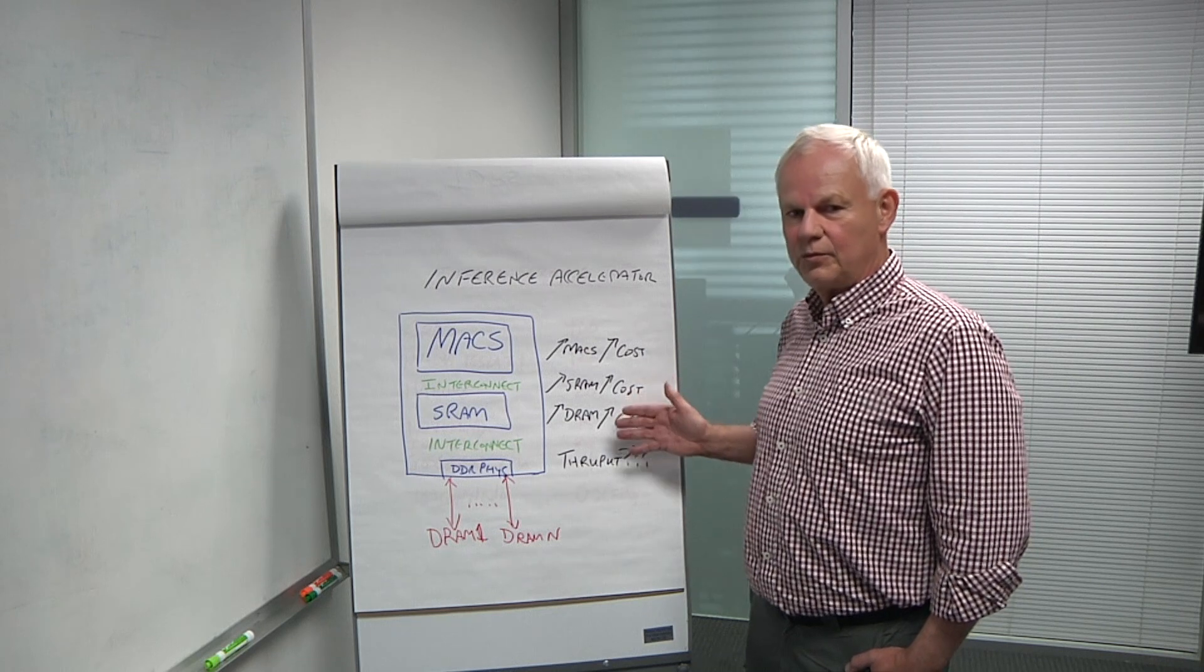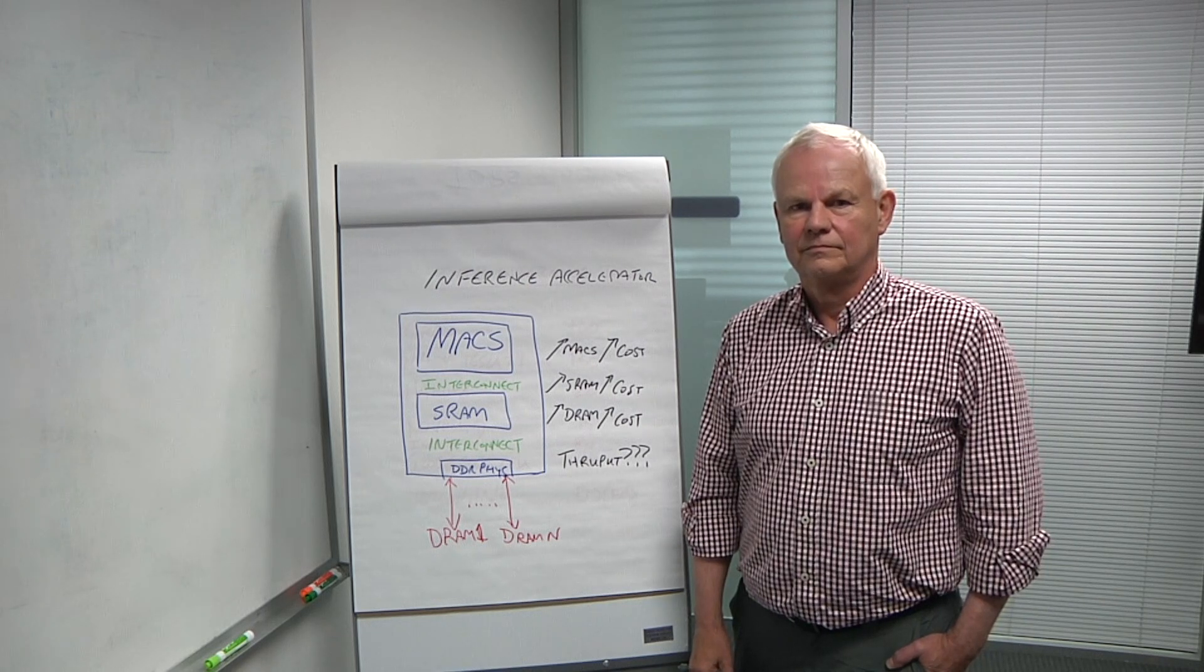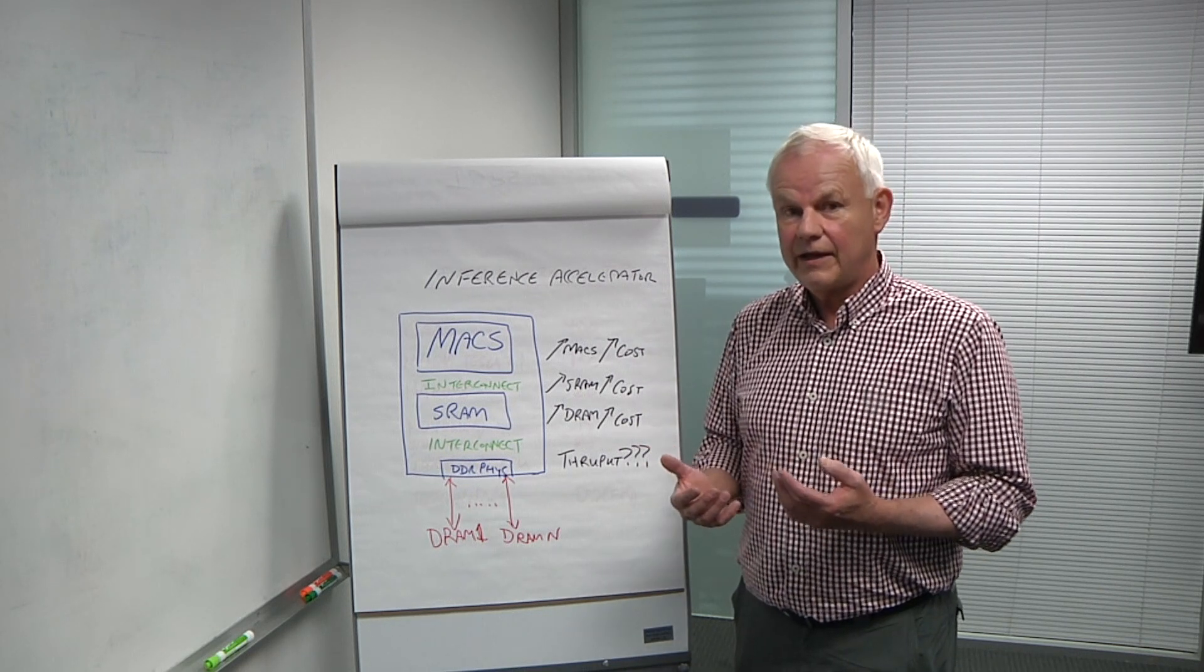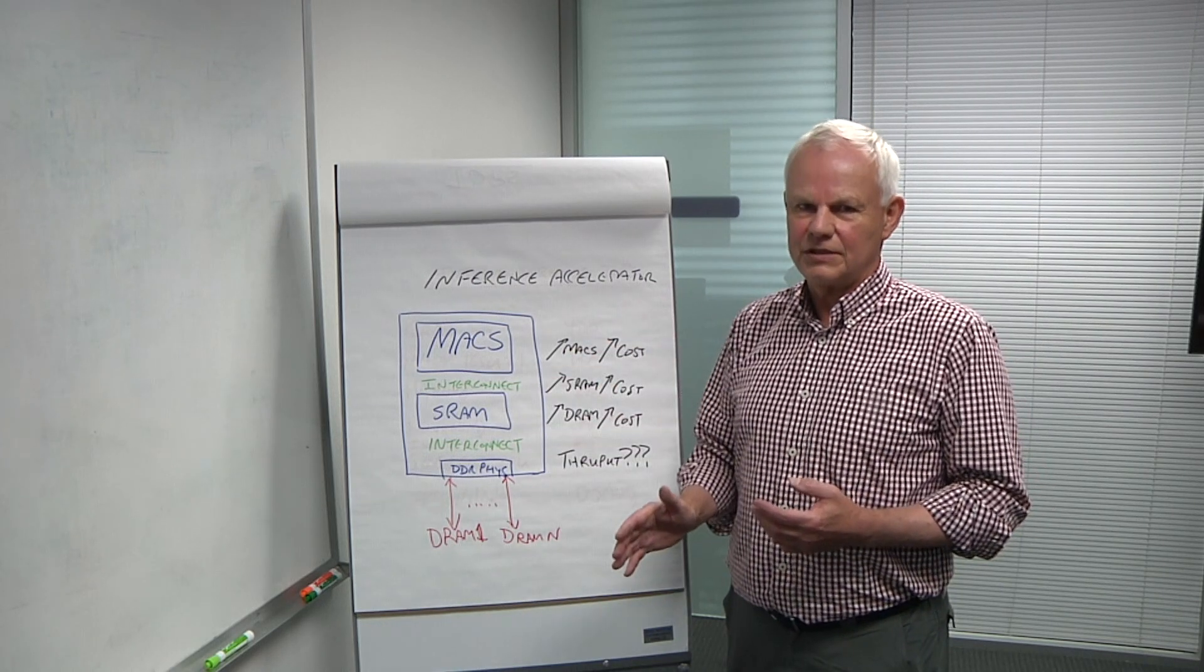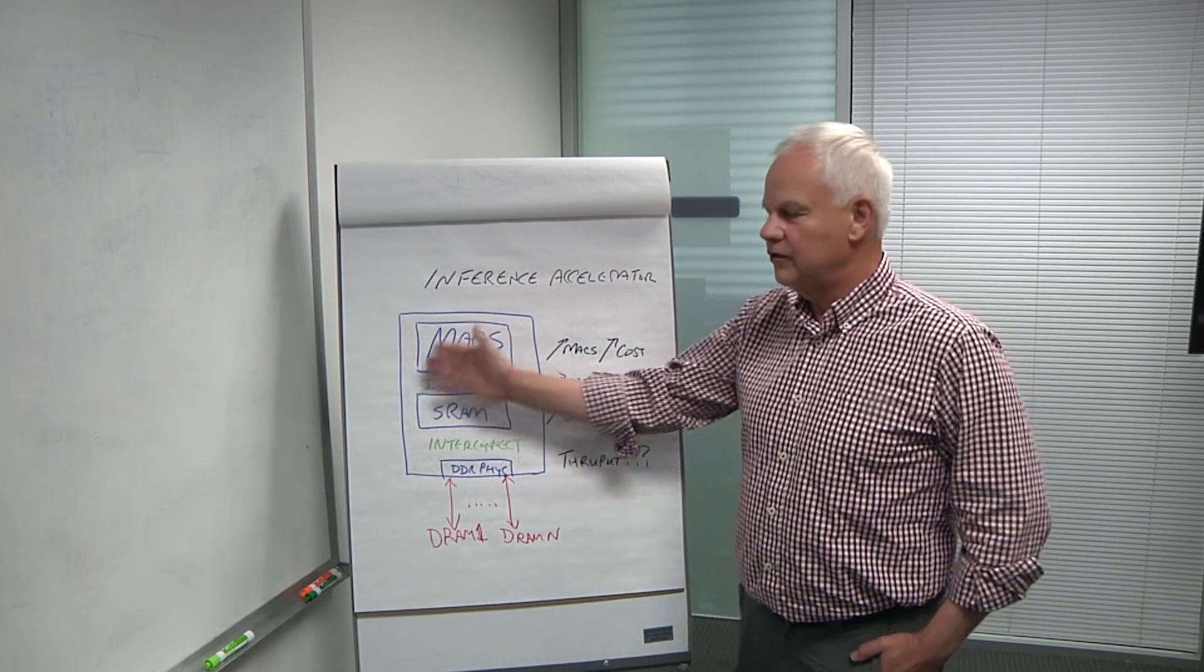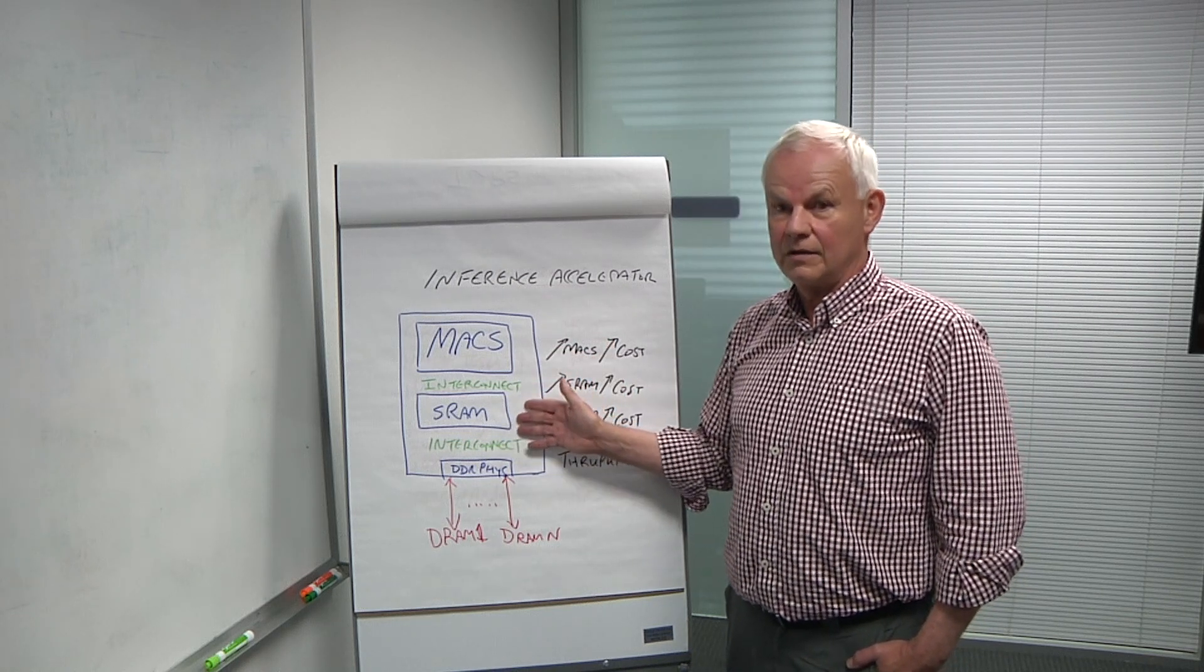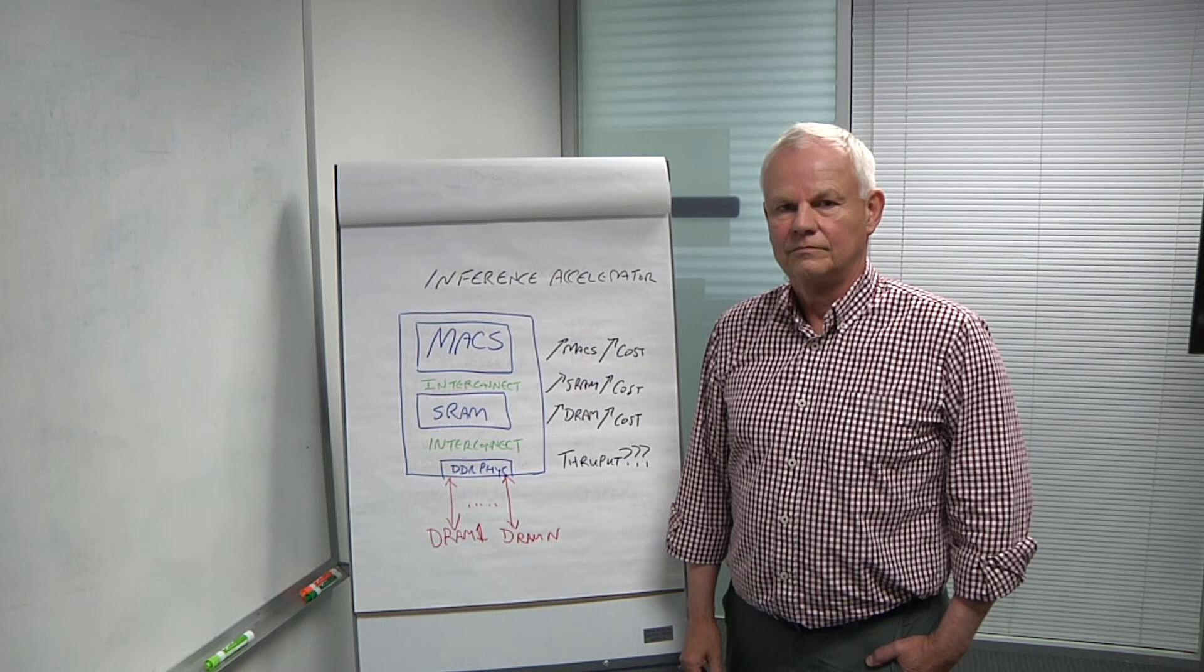Is there a way of saving on area? The area will be a function of two things. One is what's the throughput you're targeting with the chip. Some customers want object detection for backup cameras, so you don't need the same number of multiply accumulators as you need for a front-facing camera going 60 miles per hour. But the area of the chip will also be a function of how efficient the architecture is. Some architectures will use the resources much more efficiently than others.